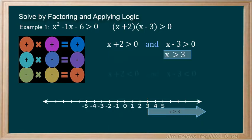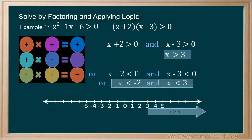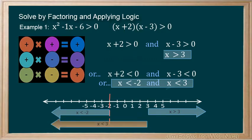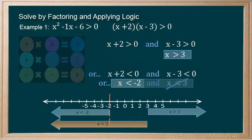Our second option is that X must be less than negative 2, and X must be less than 3. Once again, if X is less than negative 2, it's less than 3 for sure. So we can eliminate the restriction X is less than 3.